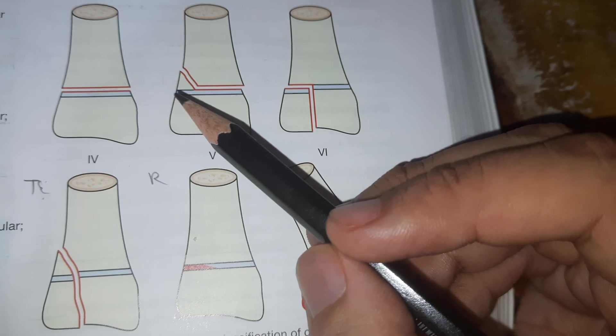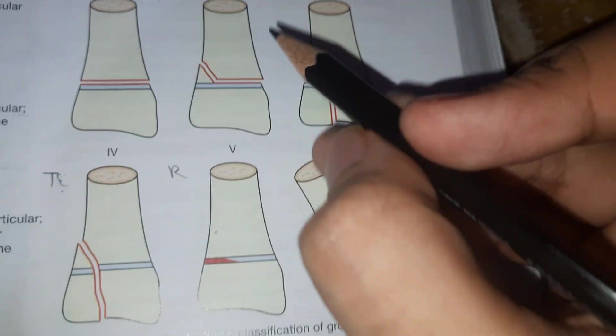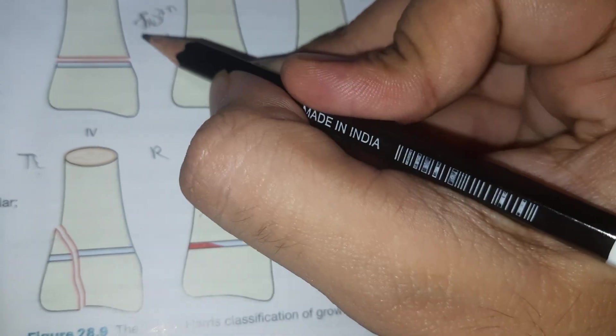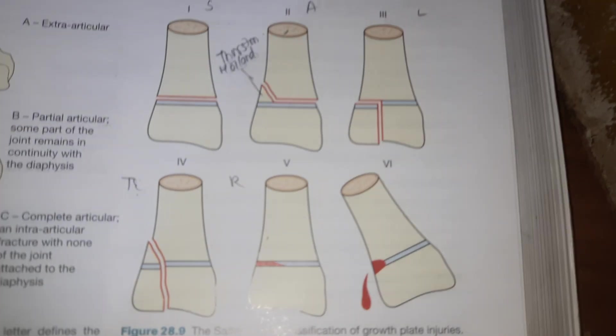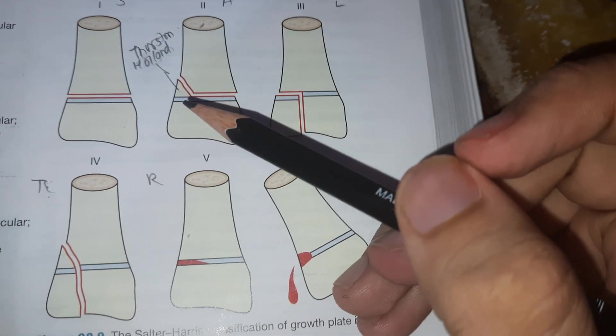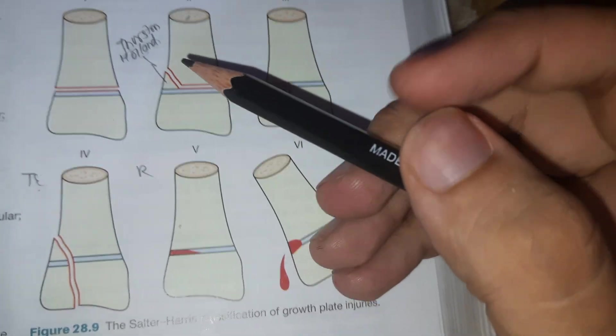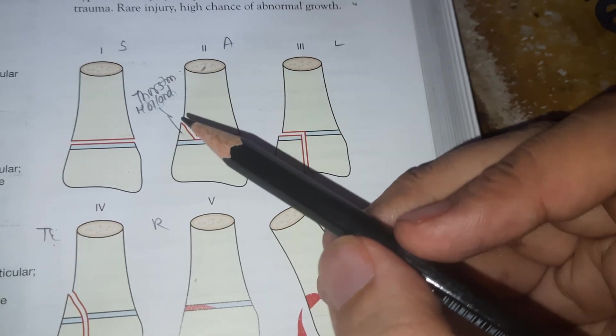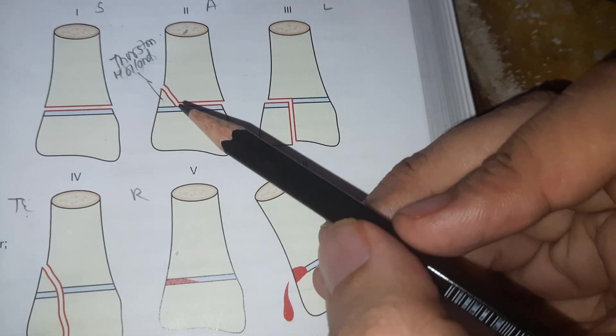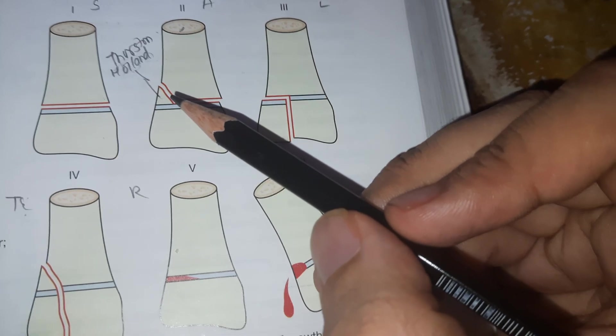It produces a metaphyseal fragment, and this metaphyseal fragment is called the Thurston-Holland sign. We can remember by the mnemonic that the fracture line passes through the physis and exits through the metaphysis above. A for above.